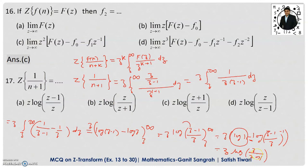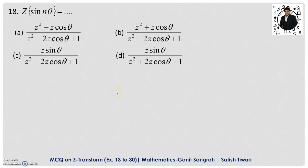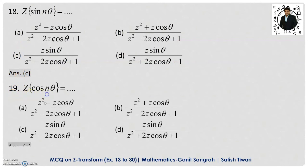You should remember this formula because the derivation is lengthy. Also, the Z-transform of sin(nθ) is z·sinθ / (z² − 2z·cosθ + 1), option C. And the Z-transform of cos(nθ) is (z² − z·cosθ) / (z² − 2z·cosθ + 1), option A — as covered in question 19. You must remember both these formulas as they will be used in upcoming derivations.